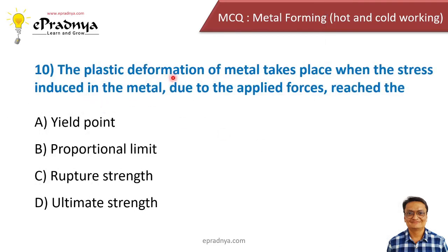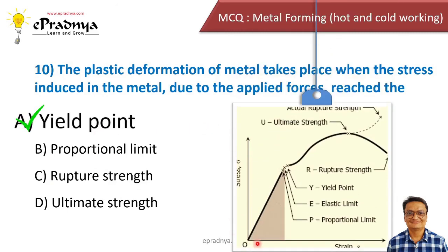Tenth MCQ: Plastic deformation of metal takes place when the stress induced in the metal due to the applied force reaches — the yield point, proportional limit, rupture strength, or ultimate strength? The correct answer is the yield point. On a stress-strain curve, the stress is on the y-axis and strain on the x-axis. P is the proportional limit, E is the elastic limit, and Y is the yield point. Actual plastic deformation of the metal takes place when the stress reaches the yield point.